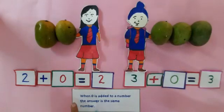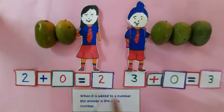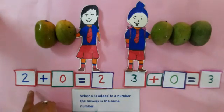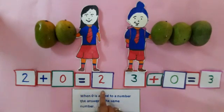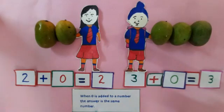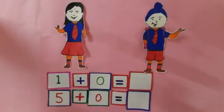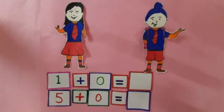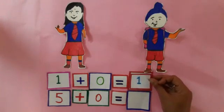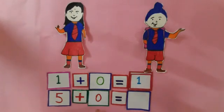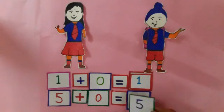Children, we see that when 0 is added to a number, the answer is the same number. 2 plus 0 is equal to 2, and 3 plus 0 is equal to 3. Now, children, let us solve these questions. 1 plus 0 is equal to what? What is the answer? Very good. Answer is 1. 5 plus 0 is equal to what? What will come in the box? Very good. Answer is 5.